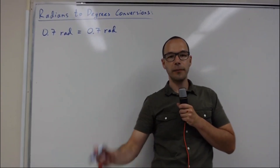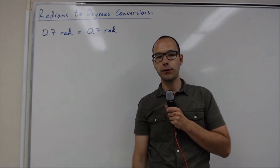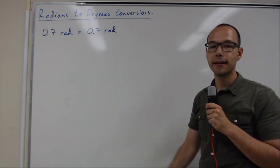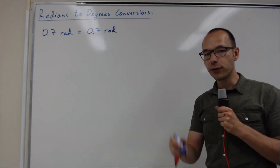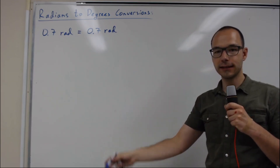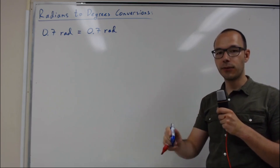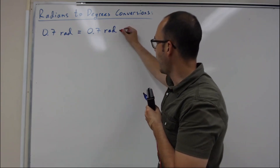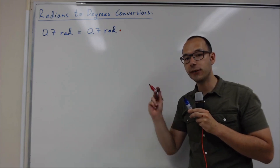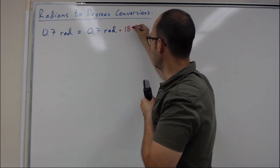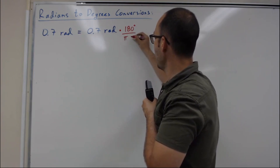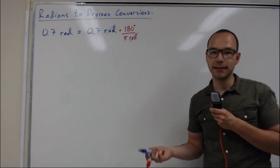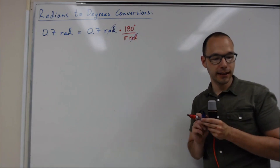Now I'm going to be converting radians to degrees, starting with the example 0.7 rad. First you have to convert the radians into degrees, then figure out the number of minutes and seconds. To start, I take 0.7 and multiply it by the conversion factor used to convert radians into degrees, which is 180 degrees per π radians. This cancels out the radian units — even though radians are not actual units, that is the usual method.